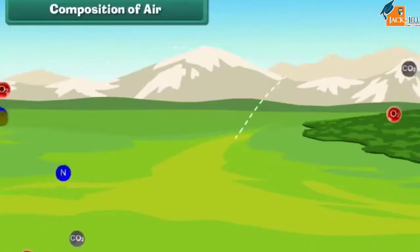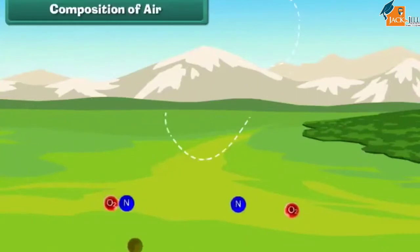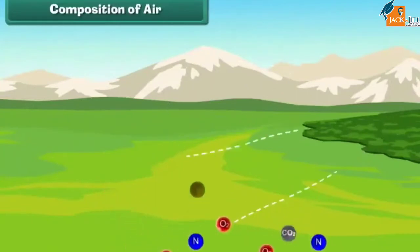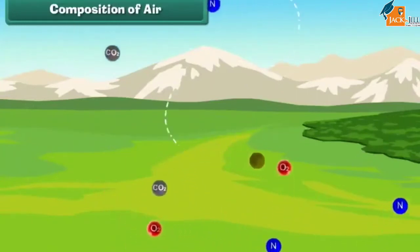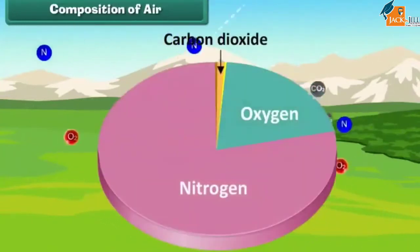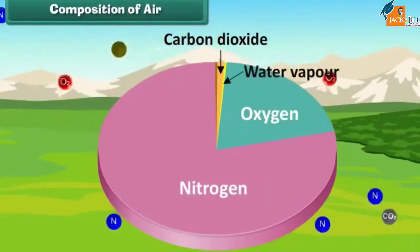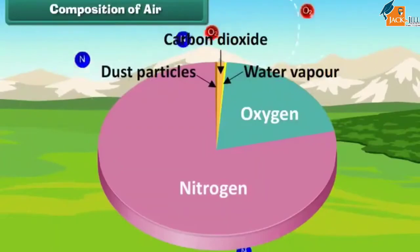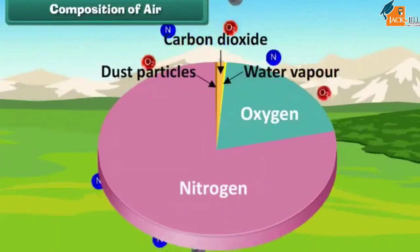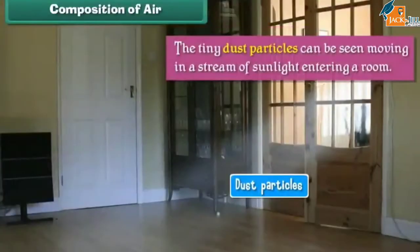Composition of air: Air is made up of several gases, the most important being nitrogen, oxygen, and carbon dioxide. Air also contains water vapour and dust particles. The tiny dust particles can be seen moving in a stream of sunlight entering a room.